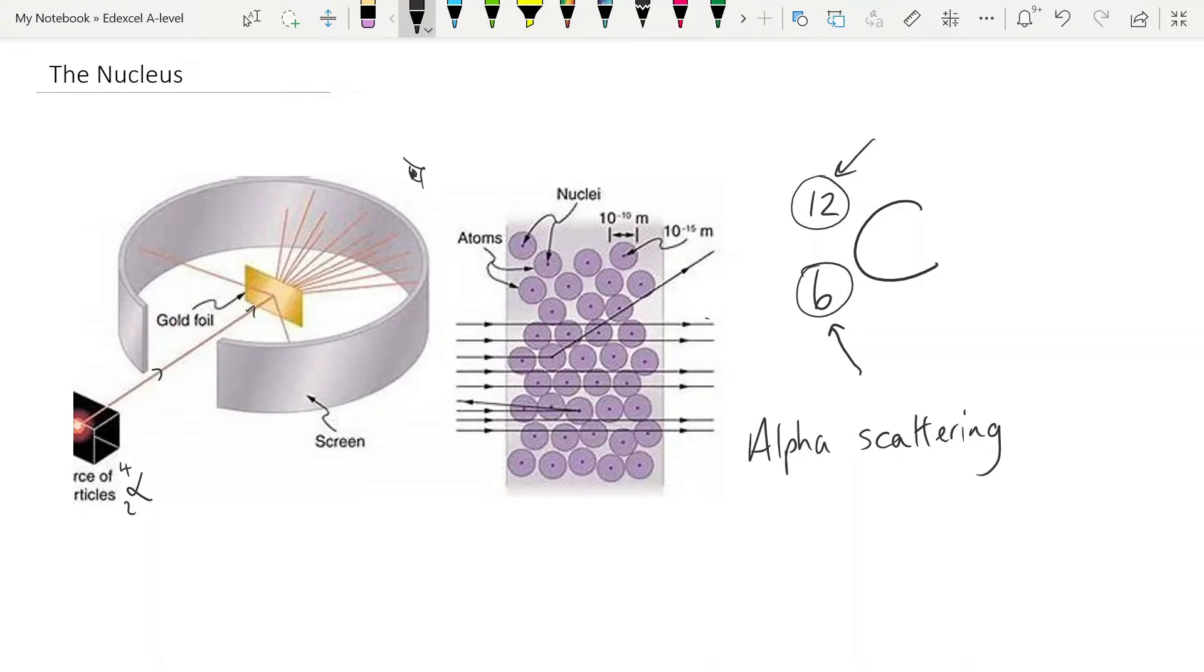Observation number one is that the vast majority of those alpha particles passed straight through the foil as if there was nothing there. The conclusion that was made from this is that there is, in fact, nothing there. Most of the atom is empty space.